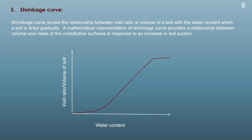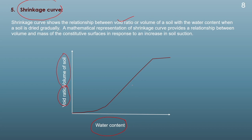Another important parameter is the shrinkage curve, which shows a relationship between void ratio (or volume) of the soil sample and the change in water content due to drying. A mathematical representation of the shrinkage curve provides a relationship between the volume and mass of the constitutive surface in response to an increase in soil suction. This drying should take place gradually, meaning it should be air dried. This is one of the most important characteristics of a soil sample during the drying stage.